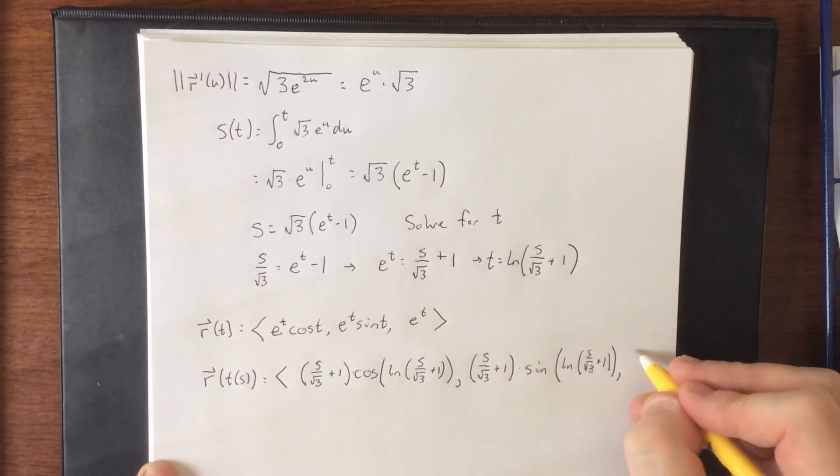Comma e to the t, s over the square root of three plus one.